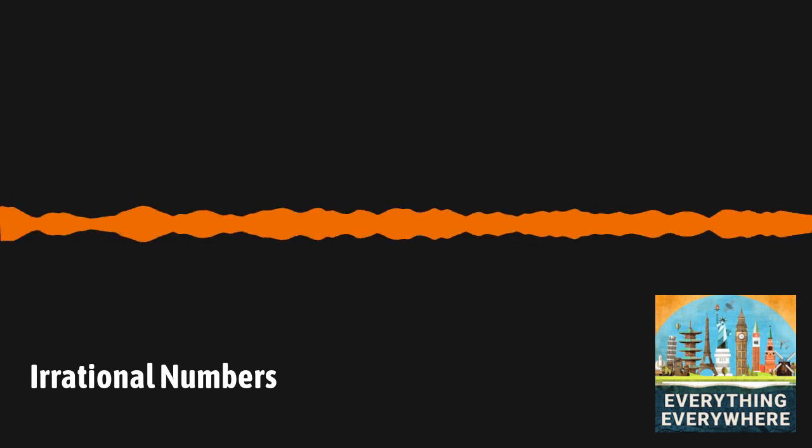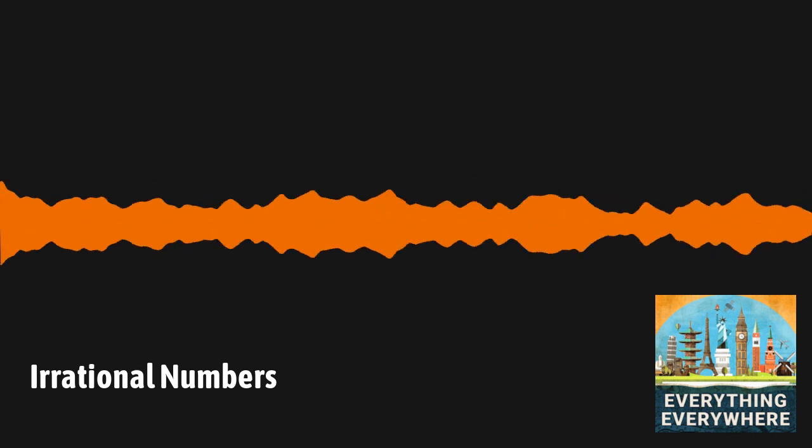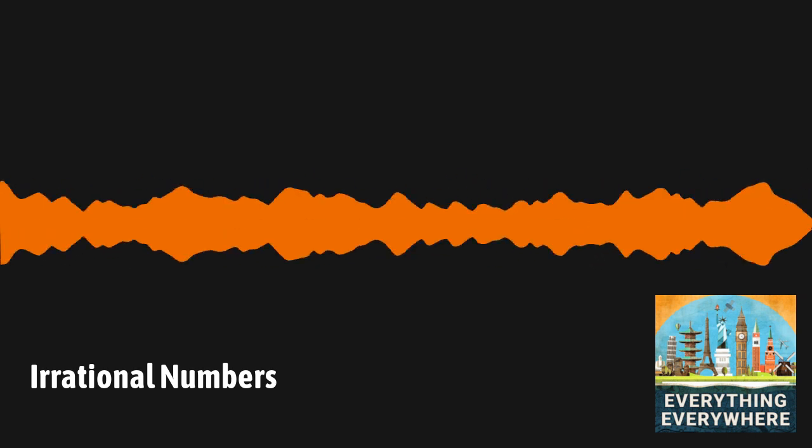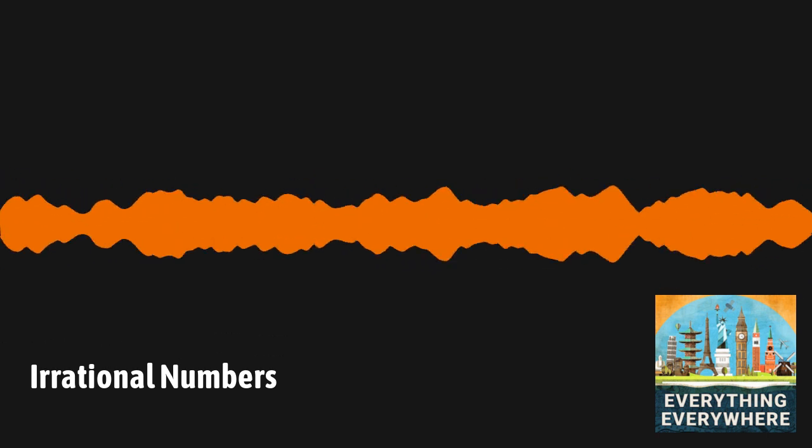Another core irrational number, which I've done an episode on, is pi. Pi is the circumference of a circle divided by its diameter. And at first, you might think that because pi is defined as one thing divided by another thing, that would make it a rational number.